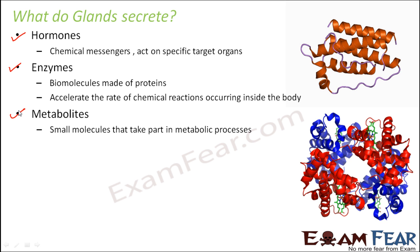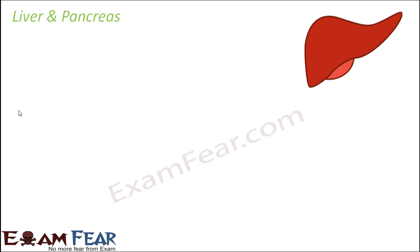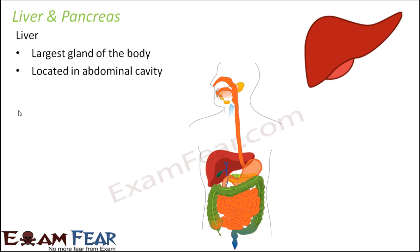Let us now talk about liver and pancreas. The liver is the largest gland of the body — the largest one among all the glands present, whether small glands like sweat glands, oil glands, or mammary glands. It is located in the abdominal cavity, and to some extent you can say it is located just behind the stomach. The stomach is located towards the right side of the abdominal cavity and the liver is located towards the left side.